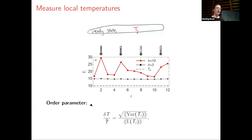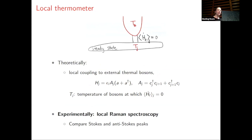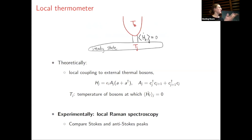One can now propose an order parameter: the variation of these local temperatures over the mean. Unlike other order parameters proposed before based on eigenstates of the system, this one is at least a bit more experimentally friendly, because it could in principle be obtained by local Raman spectroscopy in a disordered material weakly driven by light. These local temperatures could be obtained by measuring, for example, Stokes and anti-Stokes peaks with local Raman spectroscopy.